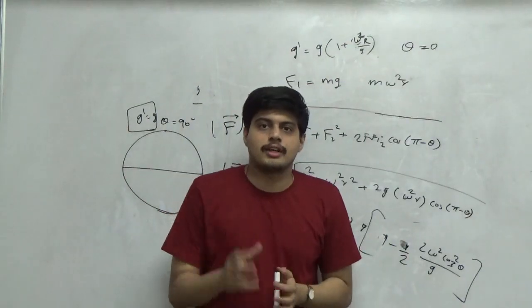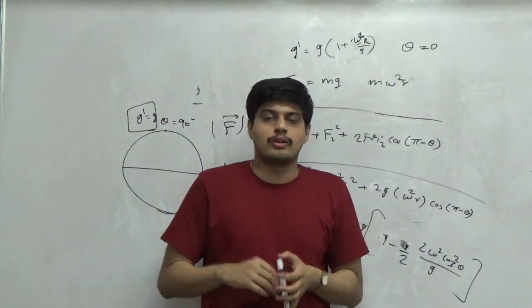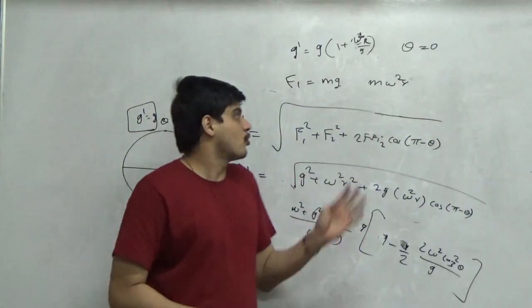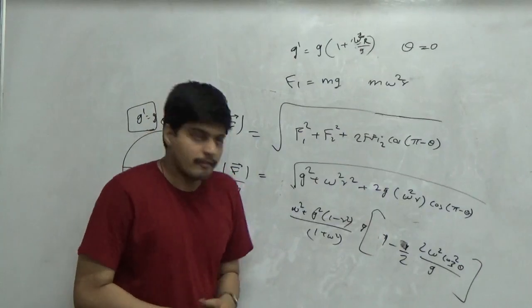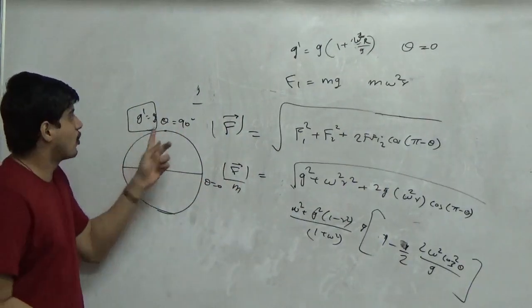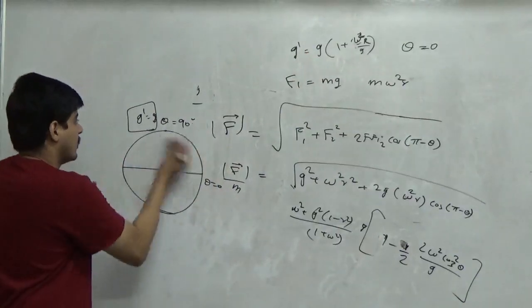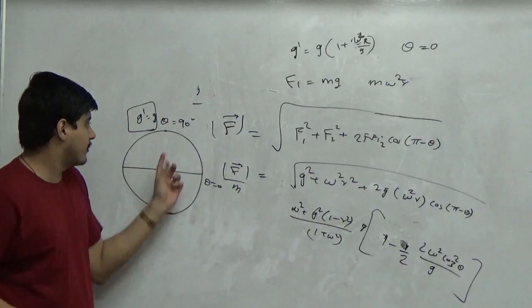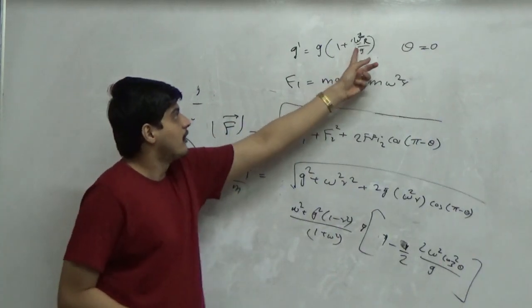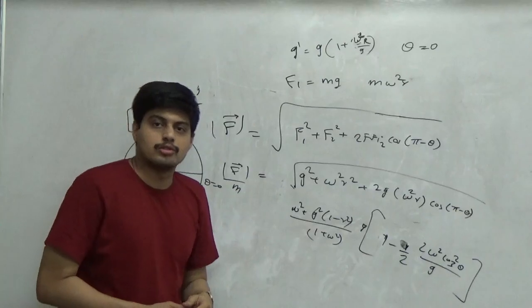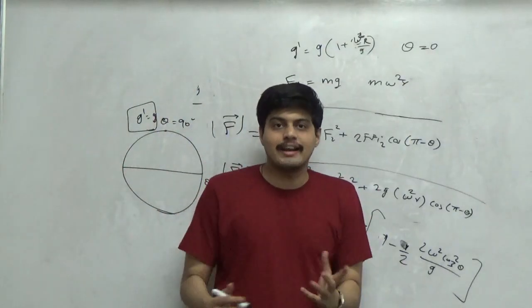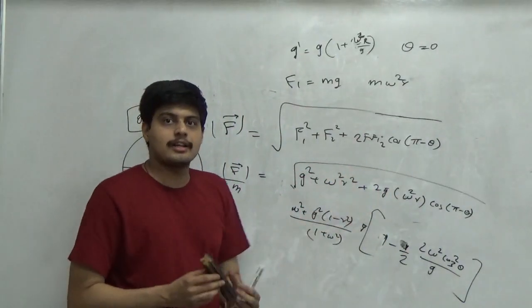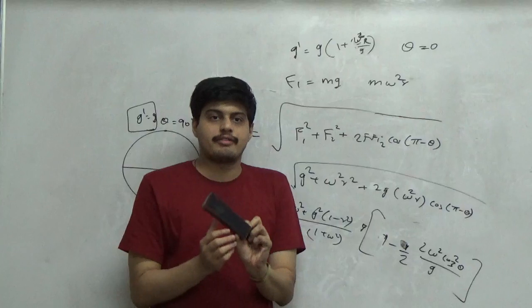This question can come as an objective question in gate where they ask you if - what happens if earth stops rotating tomorrow? When omega goes to zero, one frame of reference particularly when you settle an object in an orbit.